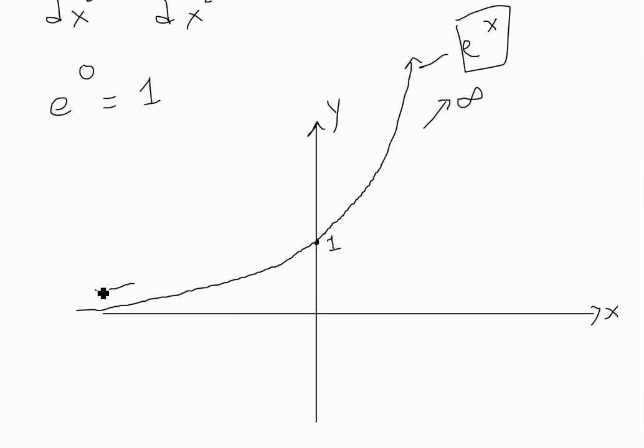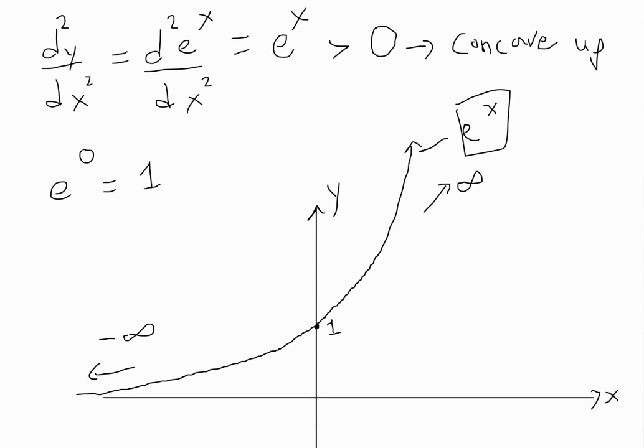At negative infinity it approaches zero, so it's a simple curve like this — goes up, always increasing and always concave up. That's the e to the x curve.